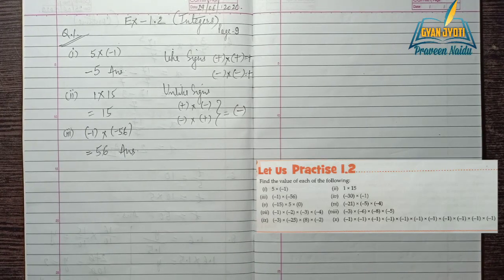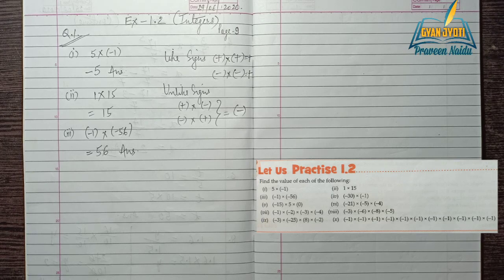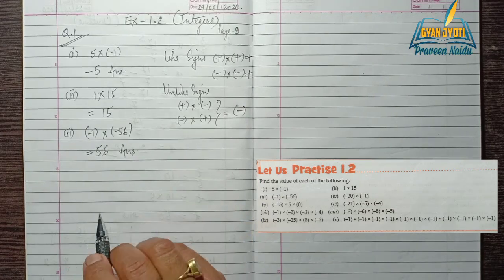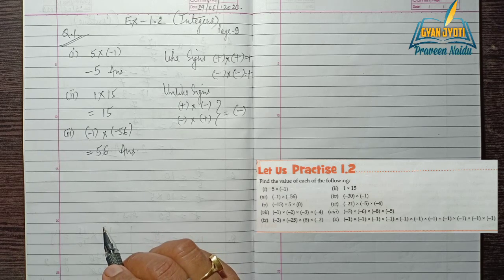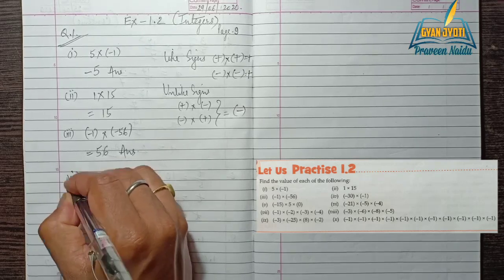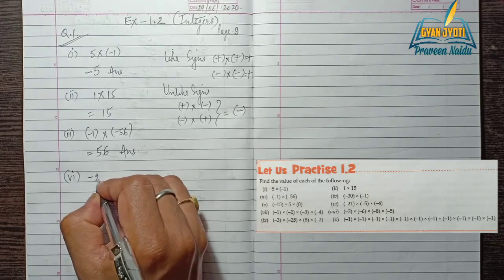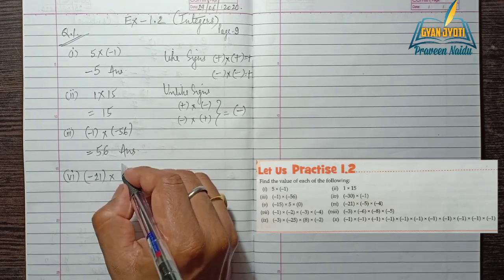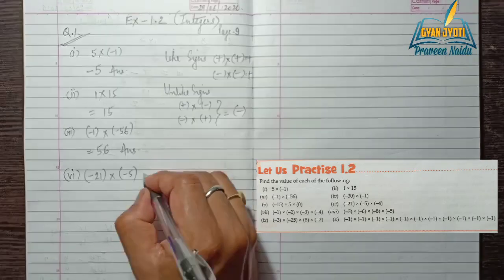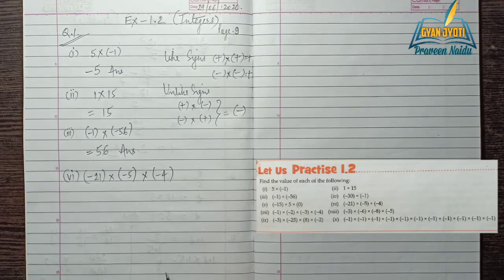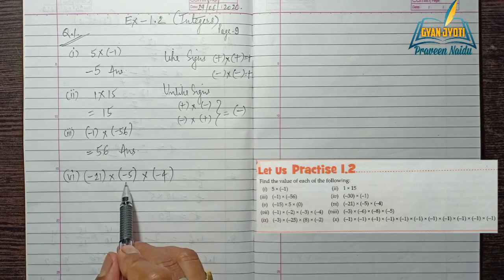So in questions 1, 2, and 3 we have solved the product of integers where only 2 integers were involved. But in further questions there are 3 integers. Let's take one more example — take number 6: minus 21 into minus 5 into minus 4. First we multiply 2 integers at a time.